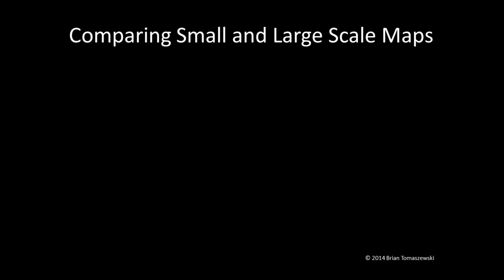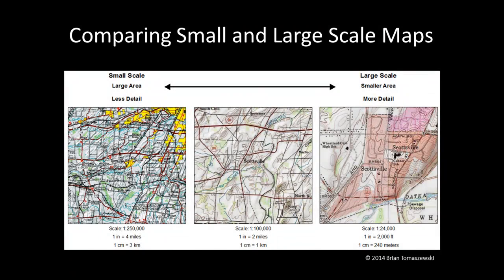These maps taken from the USGS topographic map series show the differences between small and large-scale maps. Note how the map on the left shows a larger overall area but with less detail. As the map scale changes by moving to the right through the figure, smaller areas are shown but with more detail.